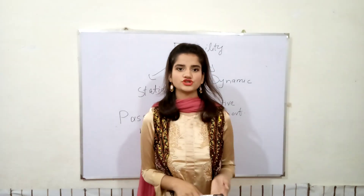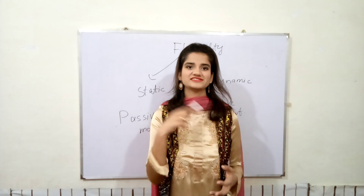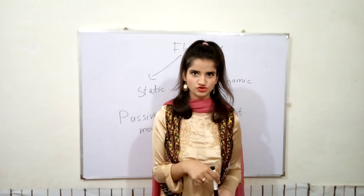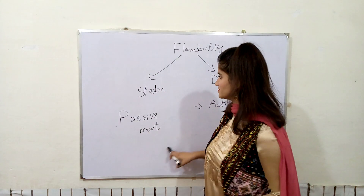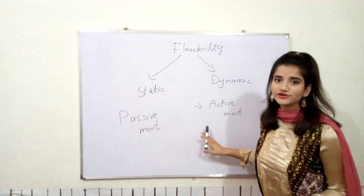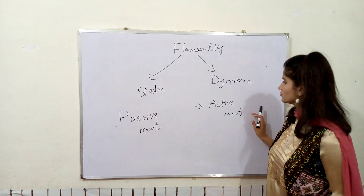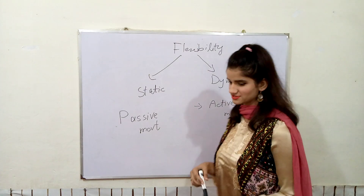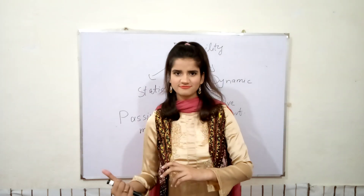If the end range of motion is achieved passively at any joint, then it will be considered as static flexibility. While if the end range of motion is being achieved by active motion, then it will be considered as dynamic flexibility.